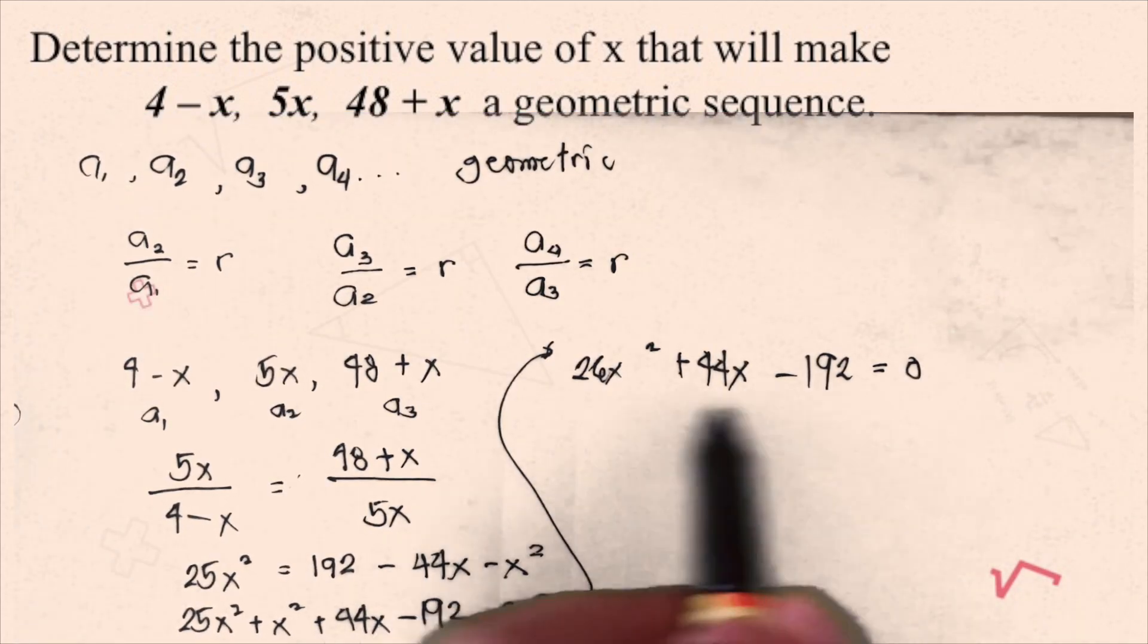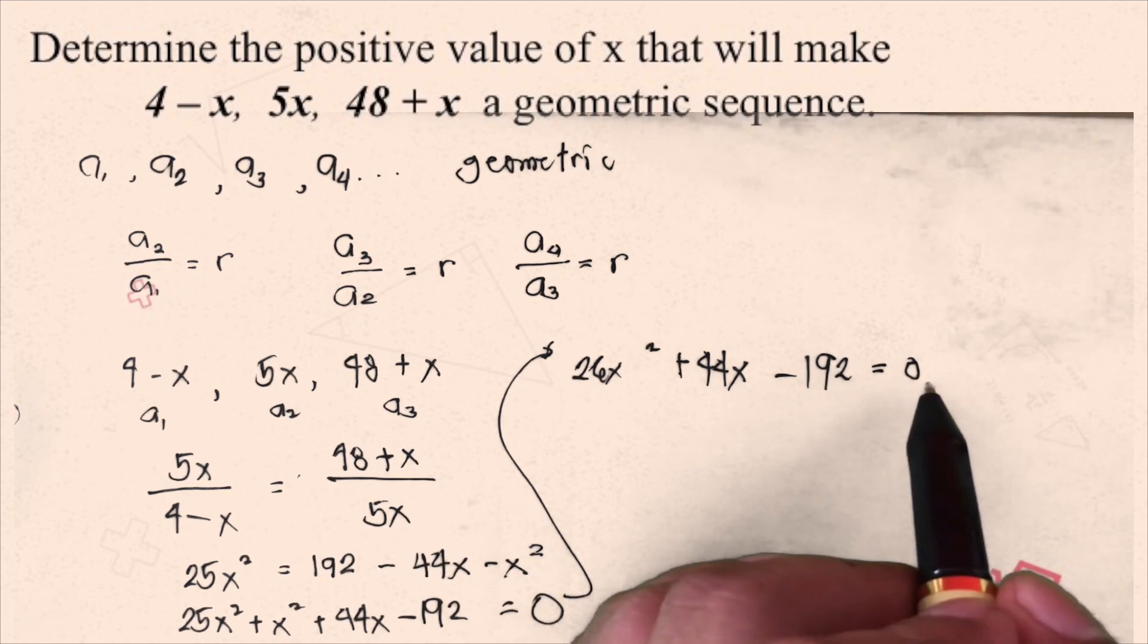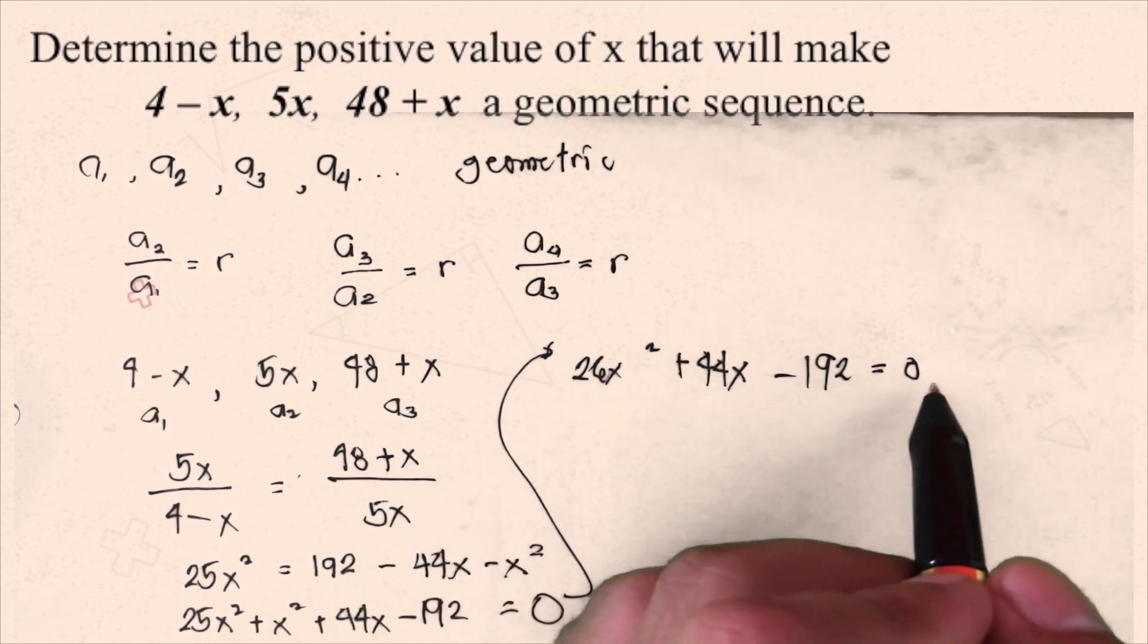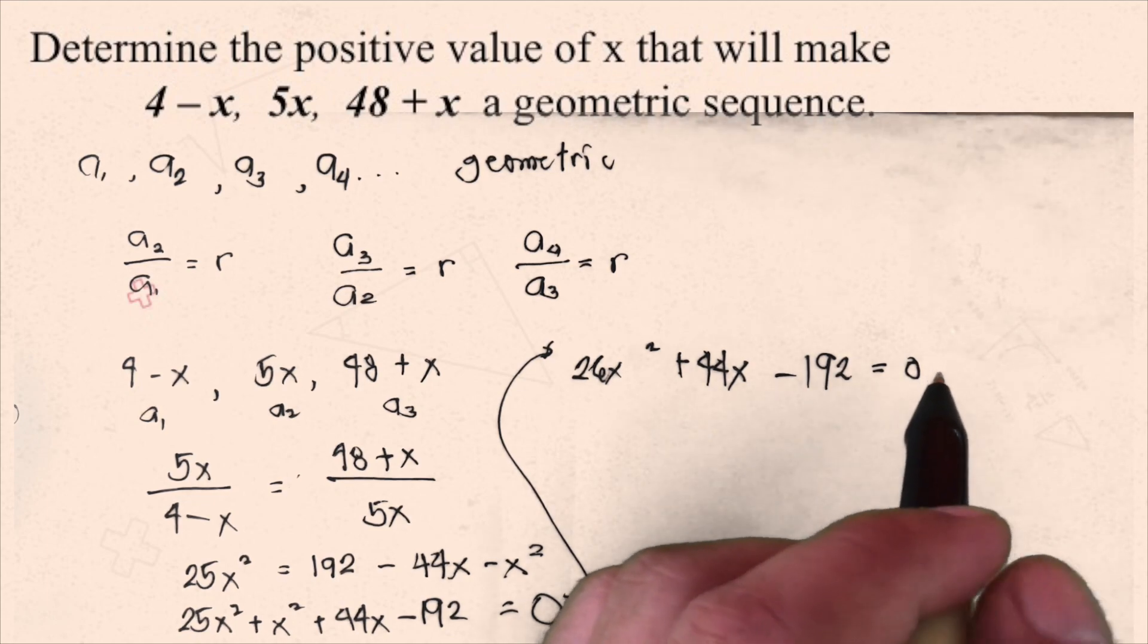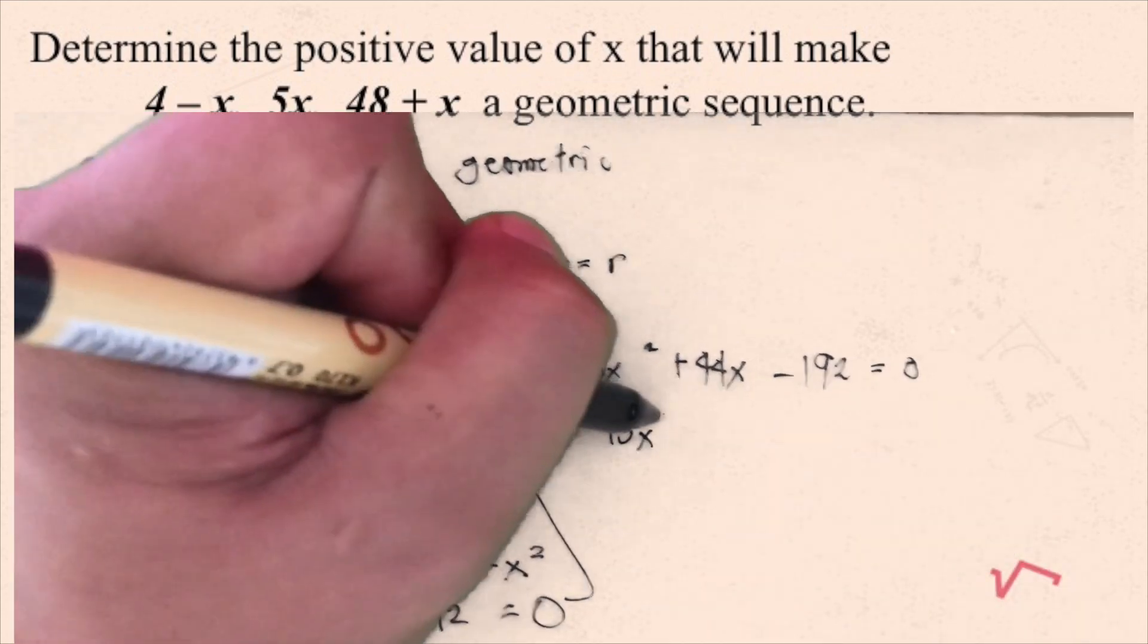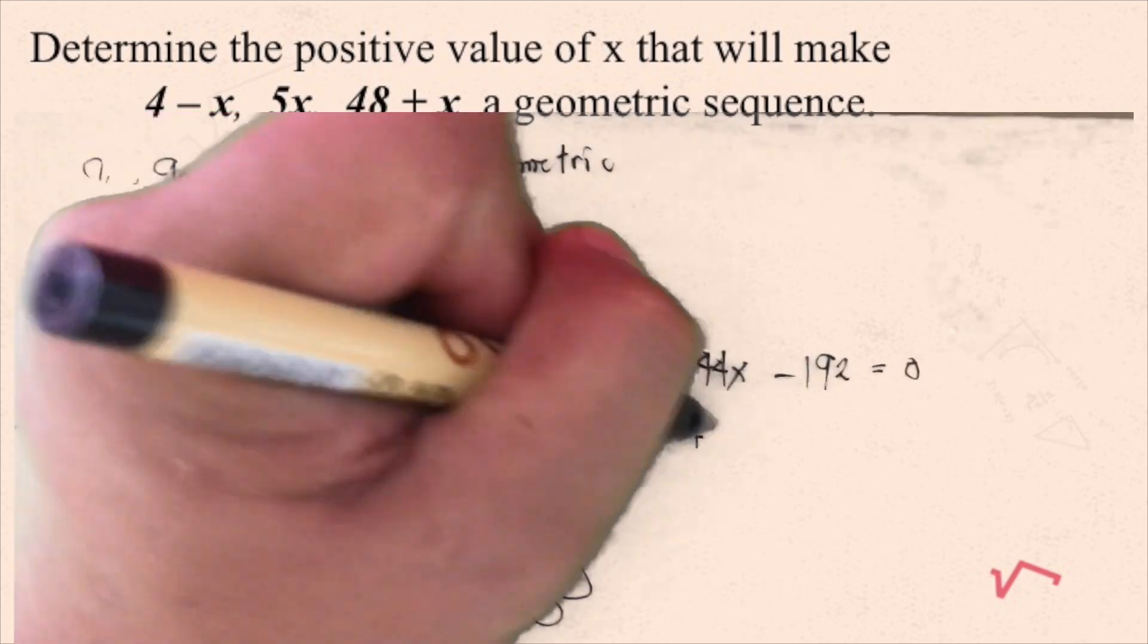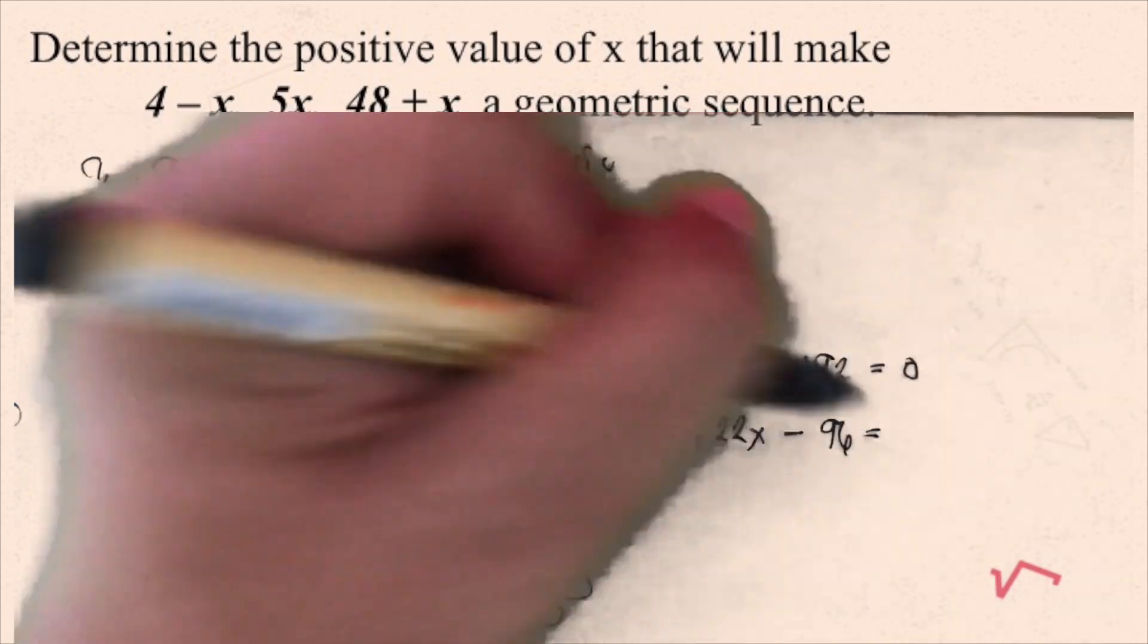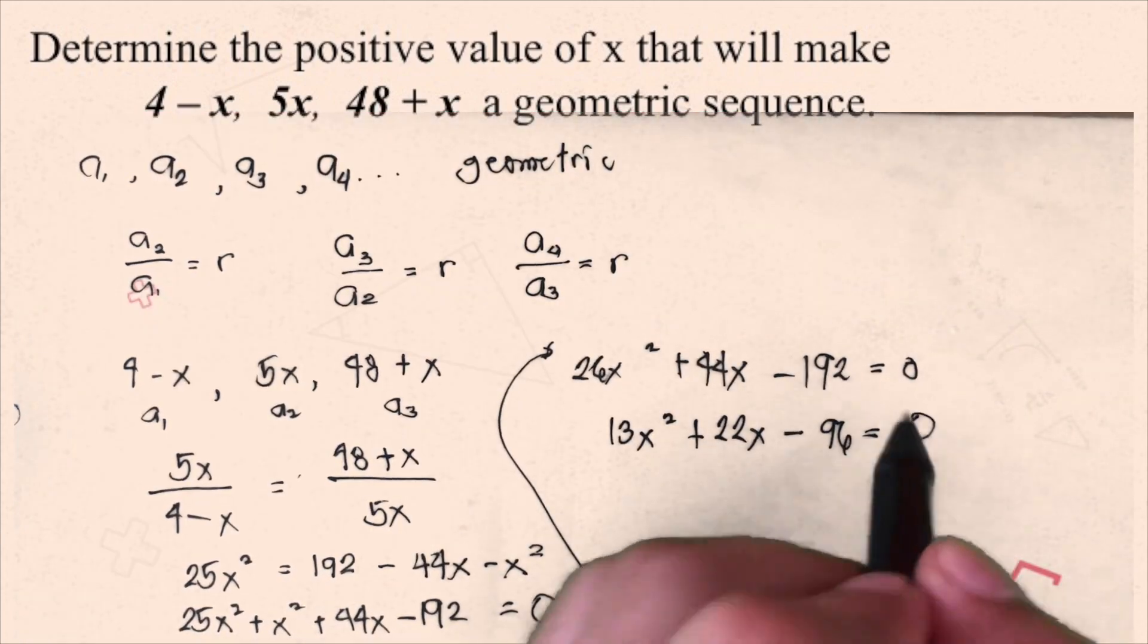So, notice we can simplify this by dividing all terms by 2. This will be 13x squared plus 22x minus 96 equals 0.